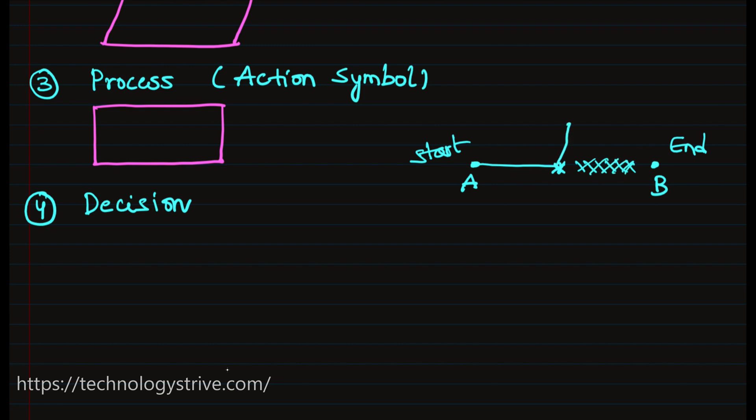Either we have to go left or we have to go right. Means we have to take some decision - either left or right. In these cases, decision symbol is going to be used. We are using a diamond symbol to represent the decision.